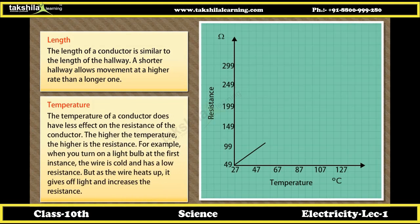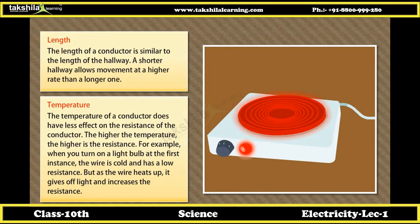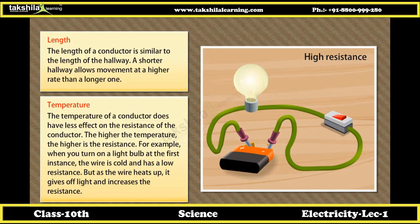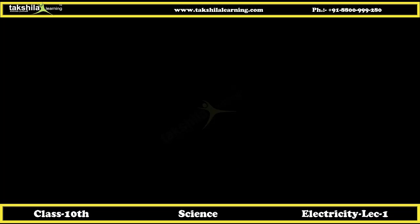Temperature. The temperature of a conductor has a significant effect on its resistance. The higher the temperature, the higher the resistance. For example, when you turn on a light bulb, the wire is initially cold and has low resistance. But as the wire heats up, it gives off light and the resistance increases.